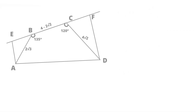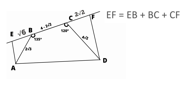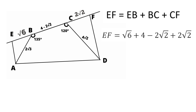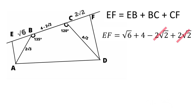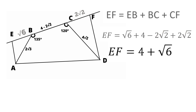Now let's calculate the entire length of EF. EF equals EB plus BC plus CF, which equals root 6 plus (4 minus 2 root 2) plus 2 root 2. The minus 2 root 2 and plus 2 root 2 cancel each other, so the length of EF equals 4 plus root 6.